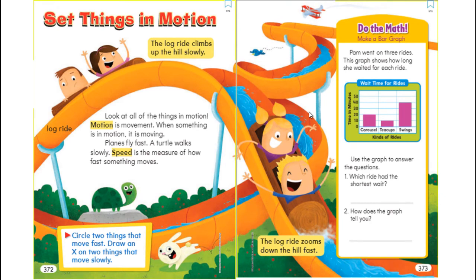Now open the next page — set things in motion. This is a game called log ride, and the boy and girl are riding it. While the log is climbing up the hill it goes slowly, but when it zooms down the hill it goes very fast. Look at the things in motion — the rabbit jumping and the turtle in very slow motion.